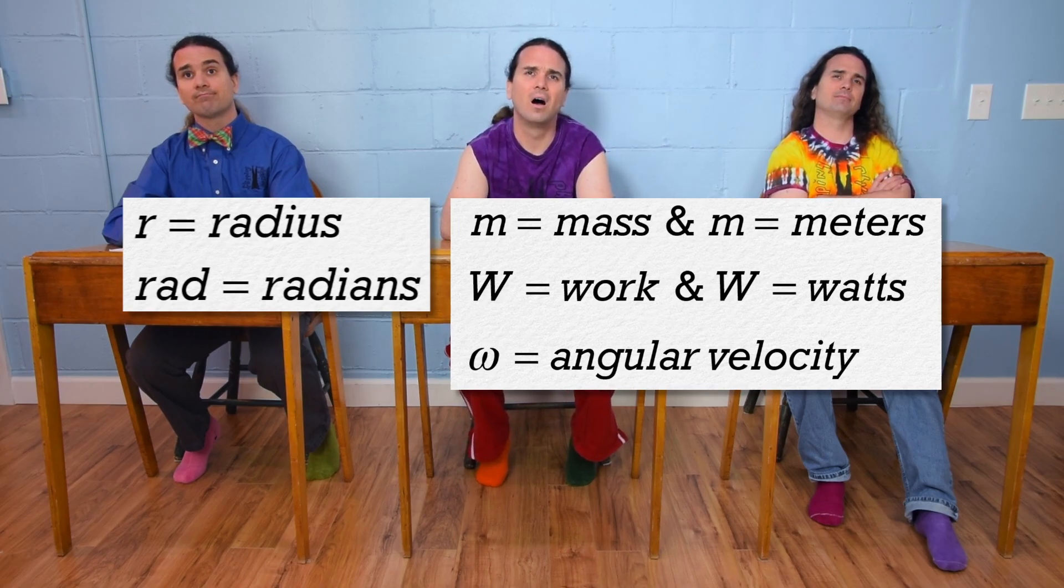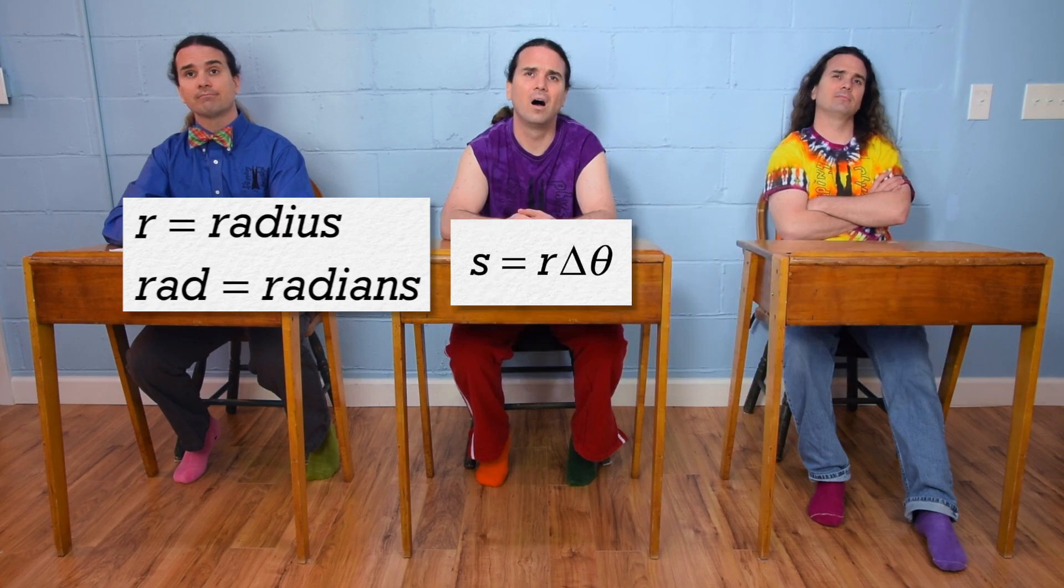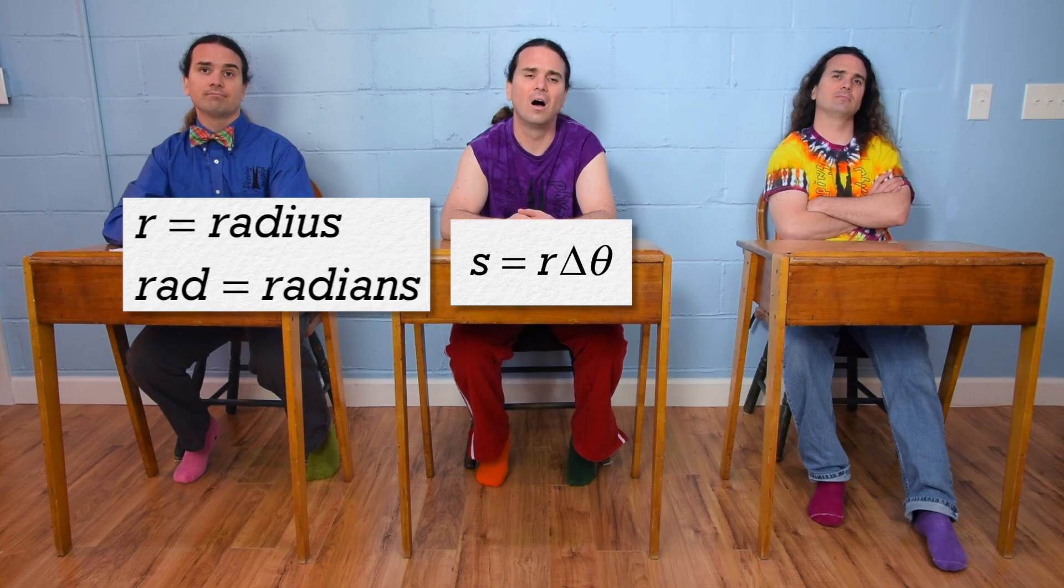However, radius and radians often appear in the same equation. For example, arc length equals radius times angular displacement.